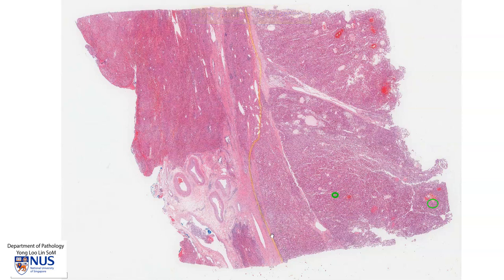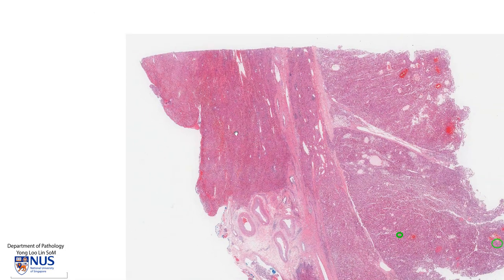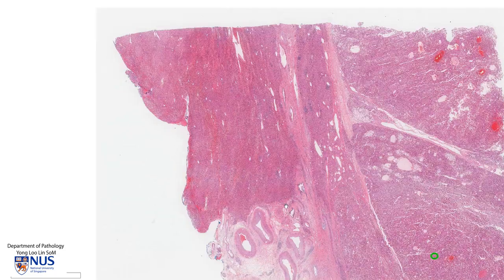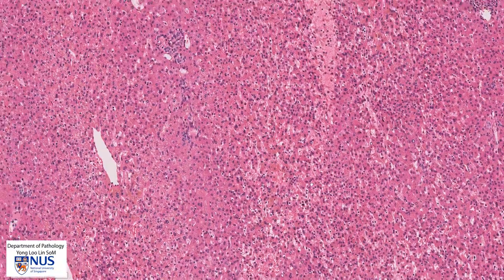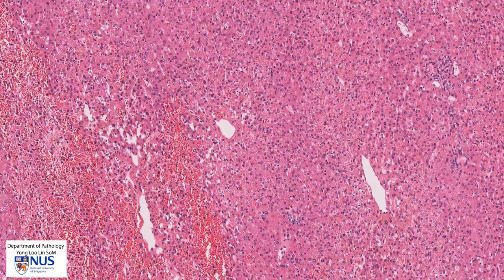The outline of the tumor is roughly here, following my pointer to this area. Let's have a very quick recap of normal liver parenchyma. These are some big blood vessels as well as a large bile duct here. In this benign area, we can see that there is actually a lot of hemorrhage and congestion, probably secondary to surgical manipulation.